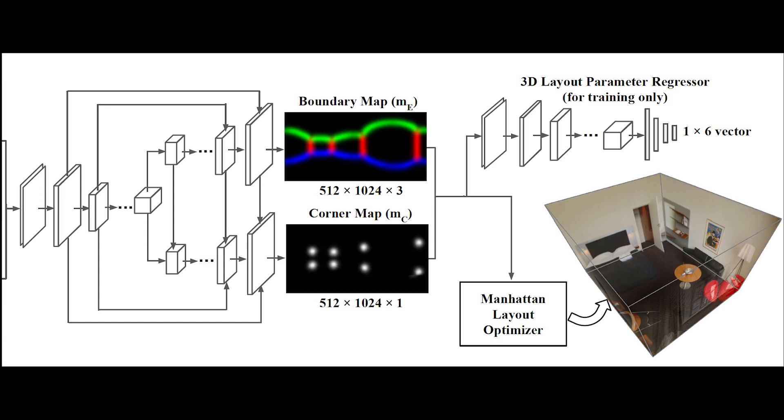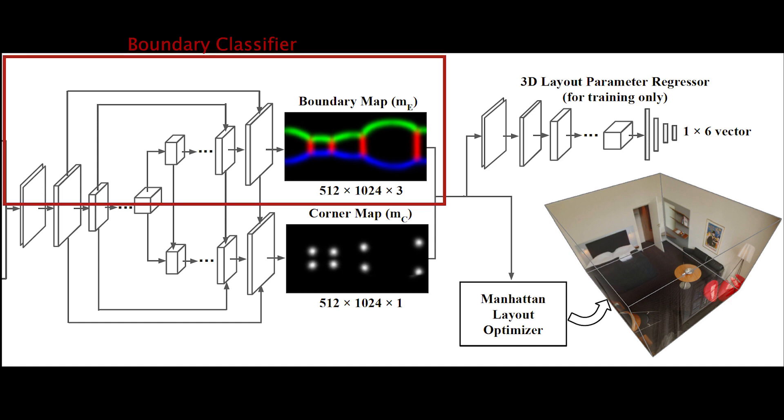The second module, neural network, can be further decomposed into three components: the boundary regressor, the corner regressor, and the 3D layout parameter regressor. The architecture of the first two regressors resembles U-Net structures that I talked about in the last video. If you cannot remember it, don't worry. I have attached it in the top right corner of this video, so you just need to tap the eye icon right here to watch it.